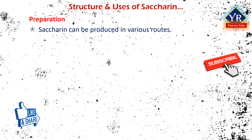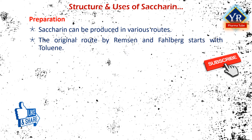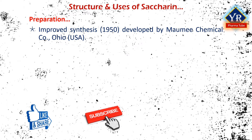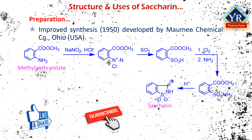Saccharine can be produced by various methods. The original route by Remsen and Falberg starts with toluene. Another route begins with orthochlorotoluene. Sulfonation of toluene by chlorosulfonic acid gives the ortho- and para-substituted sulfonyl chlorides. The ortho isomer is separated and converted to the sulfonamide with ammonia. Oxidation with potassium permanganate of the methyl substituent gives the carboxylic acid, which cyclizes to give saccharine — the free acid. In 1950, an improved synthesis was developed at the Maumee Chemical Company of Toledo, Ohio, USA. In this synthesis, methyl anthranilate successively reacts with nitrous acid, sulfur dioxide, chlorine and then ammonia to yield saccharine.